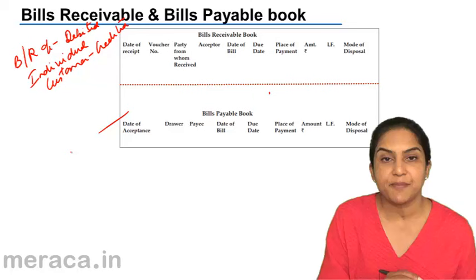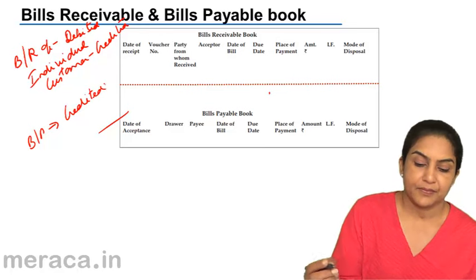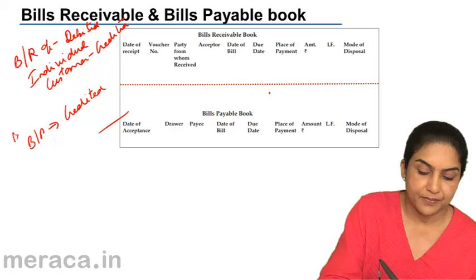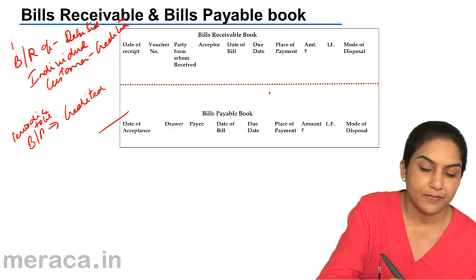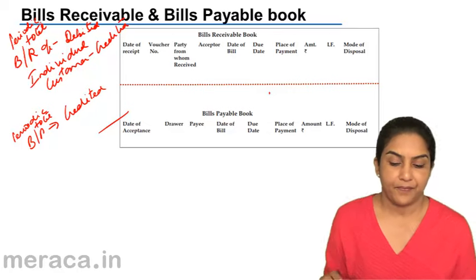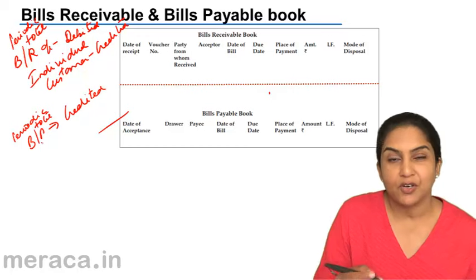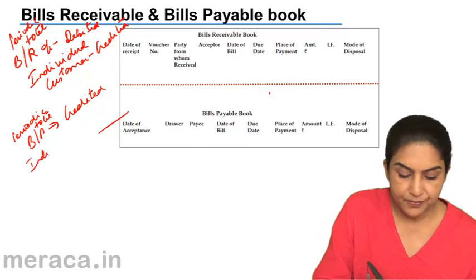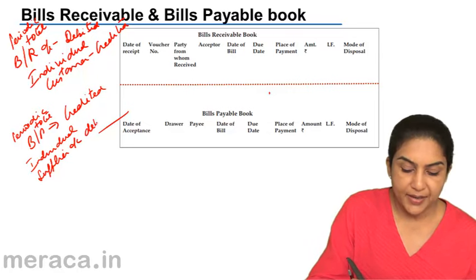What would we do in case of a bills payable? The total bills payable account — you credit the periodic total. Bills payable is credited and individual person's account, normally the supplier's account — individual supplier accounts are debited.